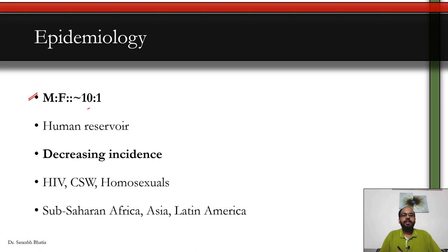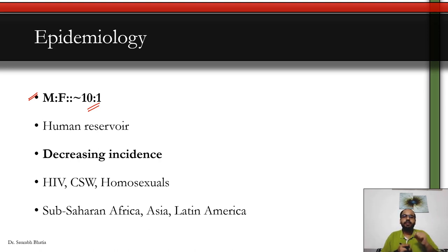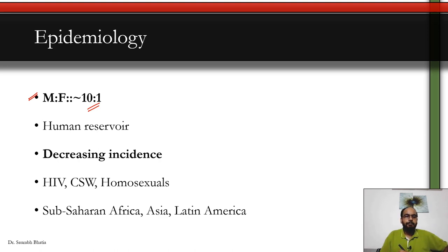The male-to-female ratio is about 10:1 — it is very common in males, especially uncircumcised males, because the prepuce provides a suitable environment for the organism to multiply and the ulcer to develop. In females, the infection is more or less asymptomatic, with ulcers hidden at internal sites like the cervix or vaginal walls. Haemophilus ducreyi occurs only in humans — there is no non-human reservoir in nature.